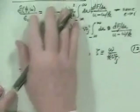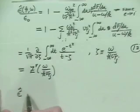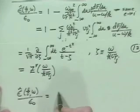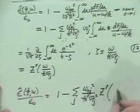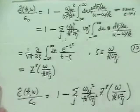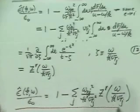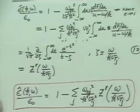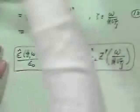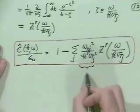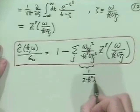Using this result in the dispersion relation, what we find is that our dispersion relation becomes: epsilon of k and omega over epsilon naught equals 1 minus the sum over species of omega_pj squared over (k squared v_thermal_j squared) times Z prime of (omega over k v_thermal_j). It's the derivative of the plasma dispersion function that comes in rather than the function itself. This factor omega squared over k squared v_thermal_j squared can also be written as 1 over (2 k squared lambda_Debye_j squared).